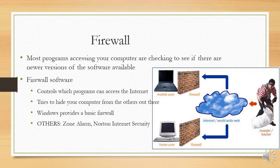Most programs accessing your computer are checking to see if there are newer versions of software available. Firewall software controls which programs can access the internet. If the firewall decides a program should not be accessing the internet — perhaps it's a virus or malware that's been installed — and it's accessing the internet to supply personal details about you that should not be going out, it will stop it. It also tries to hide your computer from others. Windows provides a basic firewall, and you can get better ones like Zone Alarm and Norton Internet Security.